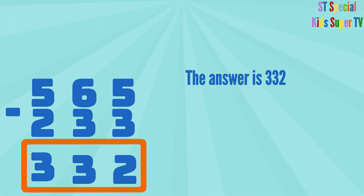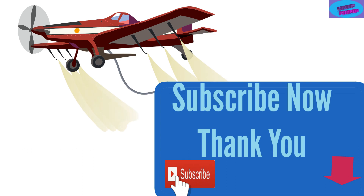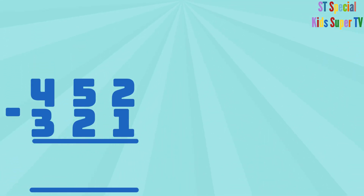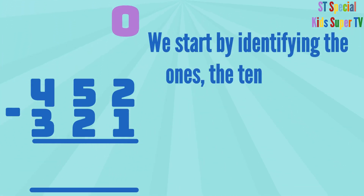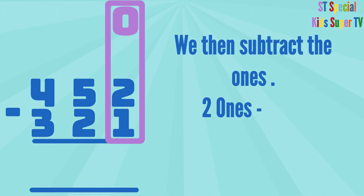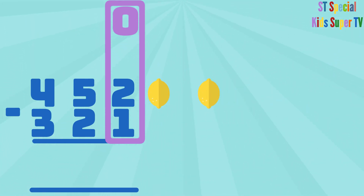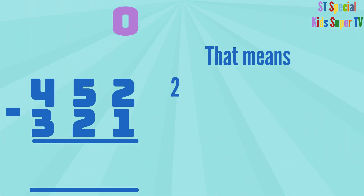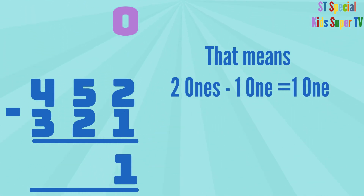Let's now calculate 452 minus 321. We start by identifying the 1s, the 10s and the 100s. We then subtract the 1s: 2 ones minus 1 one. 1, 2 lemons minus 1 lemon equals 1 lemon. That means 2 ones minus 1 one equals 1 one.